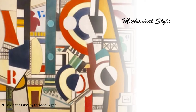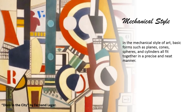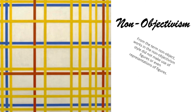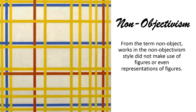In the Mechanical Style of art, basic forms such as planes, cones, spheres, and cylinders fit together in a precise and neat manner. An example is The City by Fernand Léger. In Non-Objectivism, works do not make use of figures or any representation of figures.